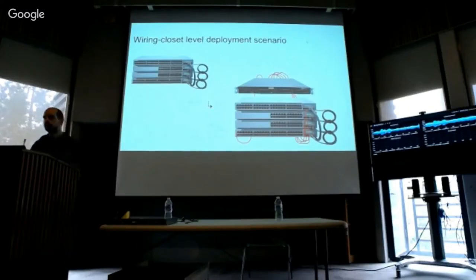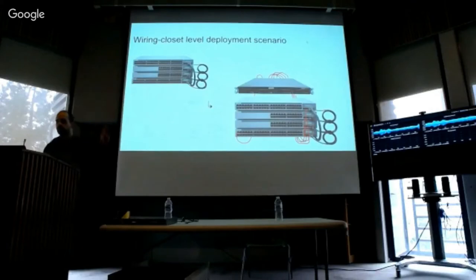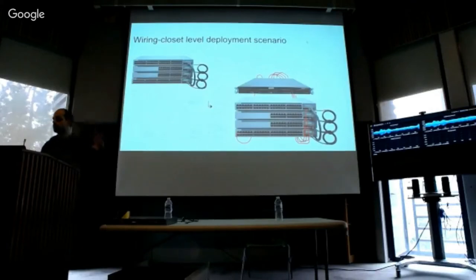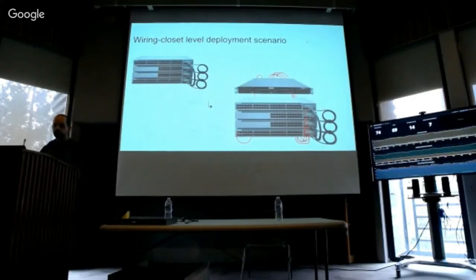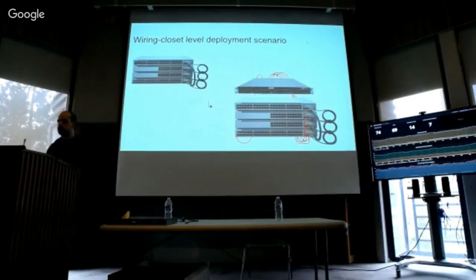For network operators familiar with the trials and tribulations of stacking: typically it's four switches with four CPUs running four copies of the control plane, but three of them are kind of stupid — just acting as slaves accepting control plane configuration. There are some Ethernet cables in the front. In the bad old days it used to be a proprietary connector; now, thankfully, it's Ethernet.